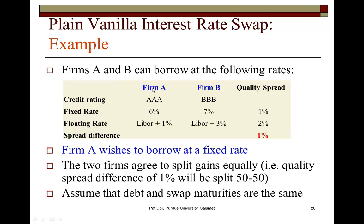If Firm A chooses to take out a fixed rate loan, for example, the cost is only 6%, which is a full percentage point less than the comparable cost for Firm B. In the floating rate market, the quality spread difference is even greater.